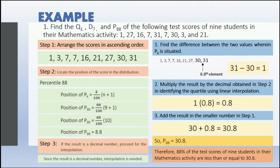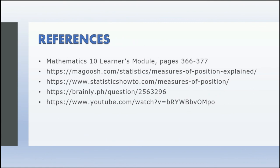Just remember: when we say quartile, the data are divided into 4 equal parts; decile means divided into 10 equal parts; and percentile means divided into 100 equal parts. Acute Angels, you did great in watching and listening. I hope you are now confident to answer activities related to it. Again, this is Teacher Anna and see you on another episode.